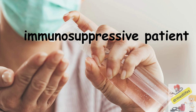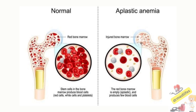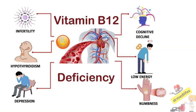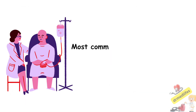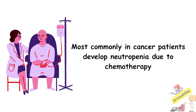Neutropenia can be seen in immunosuppressive patients, bone marrow failure, aplastic anemia, and vitamin B12 deficiency. Most commonly, cancer patients develop neutropenia due to chemotherapy.